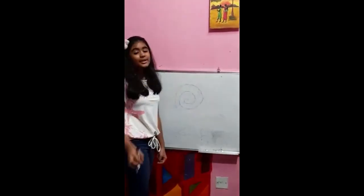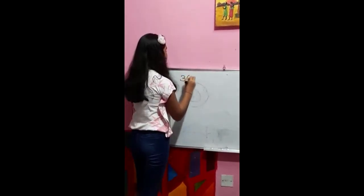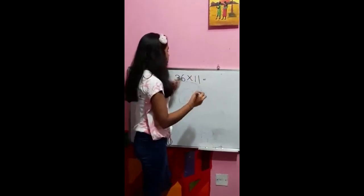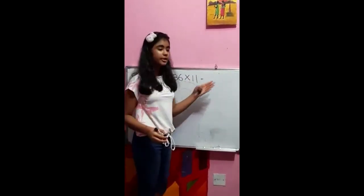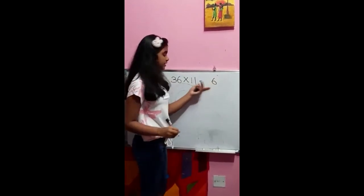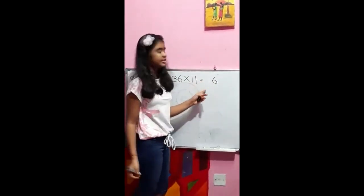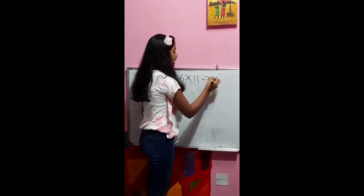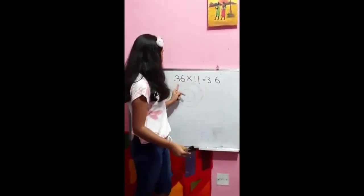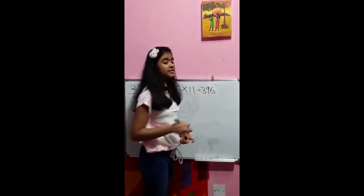Okay, next — multiplying by 11. So we'll pick 36 multiplied by 11. For the units place, you write the last number, 6. And you skip one place — that's the tens. You go to the hundreds, which is 3. And the number in between, you're going to do 3 plus 6, which is 9. So the answer is 396.